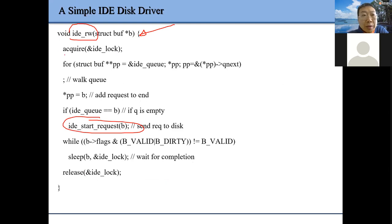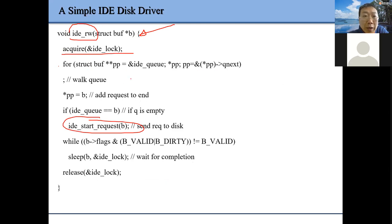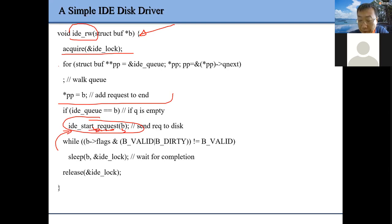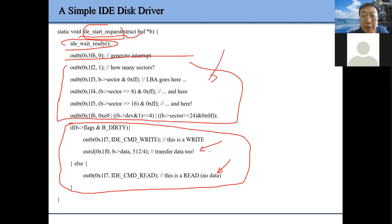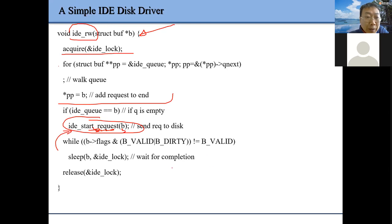This function handles the read/write request. When we handle a read/write request, we acquire the lock, check our IO queue, find the request, then start processing the IO request using start-request based on that request. From there we do the real operation.